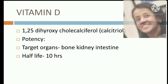Hello everyone, today we will discuss about vitamin D. The physiologically active form of vitamin D is known as 1,25-dihydroxycholecalciferol, which is also known as calcitriol. It is 100 times more potent than 25-hydroxycholecalciferol. The target organs for the action of vitamin D are bones, kidneys, and intestine, and the half-life is about 10 hours.